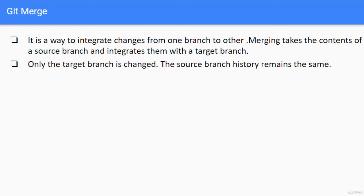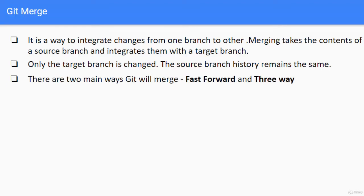Only the target branch is changed — the source branch history remains the same. Say we have two branches; in one branch changes were made, and we want to incorporate those into the other branch via merge. There are two main ways git will merge: fast forward and three-way. We will understand these gradually and perform both types practically using Eclipse.